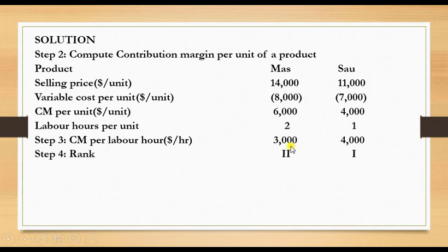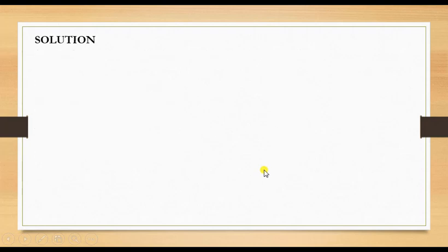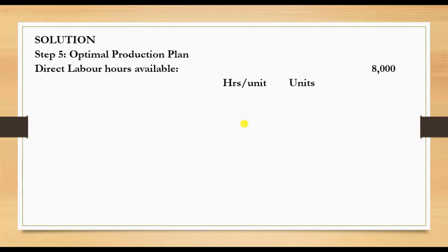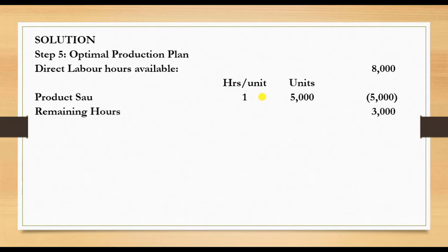We then rank the products. For a given hour, Sal earns $4,000 while Mass earns $3,000, so Sal is more profitable and is ranked first, Mass ranked second. Now for the optimal production plan: we have 8,000 direct labor hours available. We start producing the most profitable product — Sal. Sal requires 1 hour per unit and 5,000 units are needed to meet sales demand, so 5,000 hours are required for Sal.